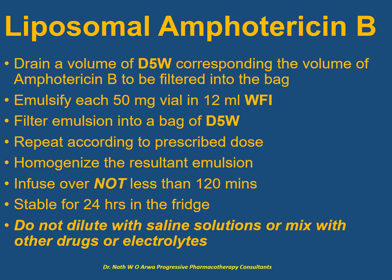For liposomal amphotericin B, dosing is 3 to 5 mg per kg per day and requires prior planning. Drain a volume of dextrose 5% from the bag corresponding to the total volume of amphotericin B that will be filtered in. Emulsify each 50 mg vial in 12 ml of water for injection, then immediately filter into the bag containing dextrose 5% solution.